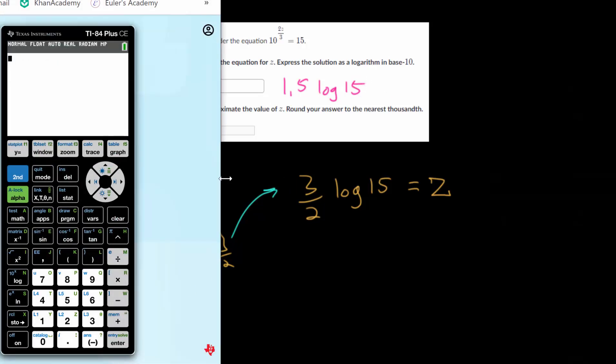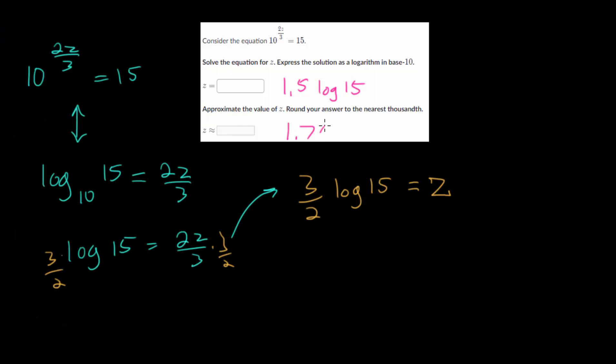We have log 15. Now let's put the rest into the calculator. So we'll clear that. We have 1.5 log 15, since we're using the common log, since this was base 10. And that's about 1.764 if we're going to the thousandth place. So we have 1.764.